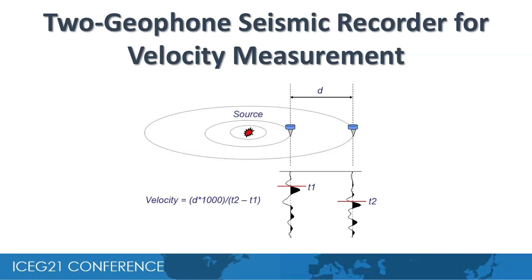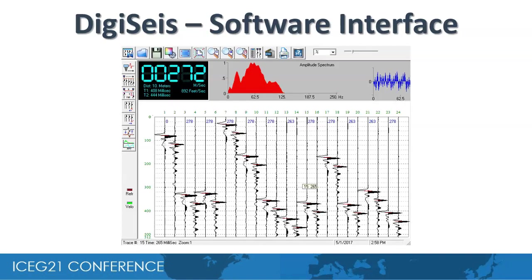A two-geophone-based seismic recorder is used to measure velocity of the topsoil. The geophones are connected to the laptop's mic input, and the seismic signals are digitized by the sound card's analog-to-digital converter. The geophones are planted one meter apart, and a hammer is used as a seismic source. Arrival times T1 and T2 are picked, and velocity is computed using the distance between the geophones and the difference in their arrival times. The DigiSize software interface takes multiple readings at a single point and computes the average; here 12 pairs of seismic traces indicate 12 velocity measurements were taken.